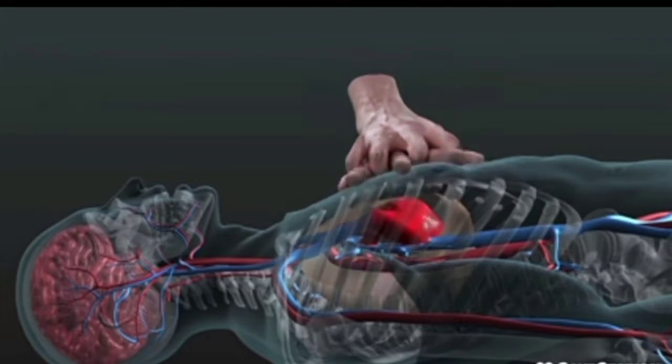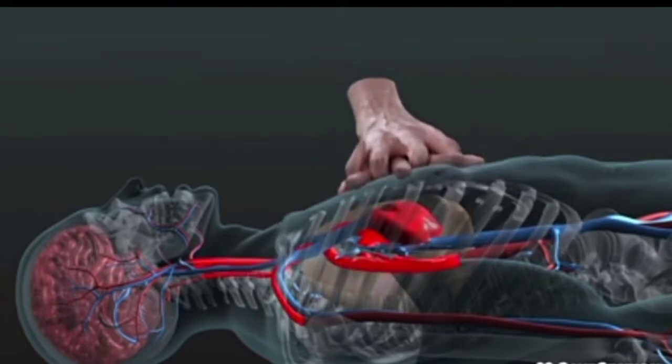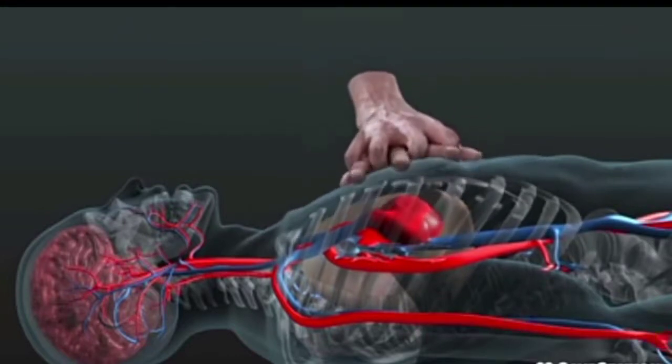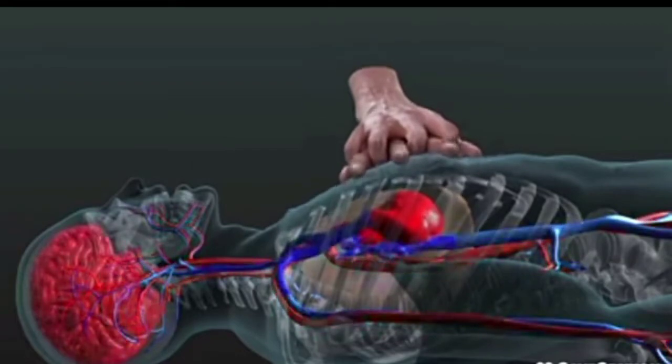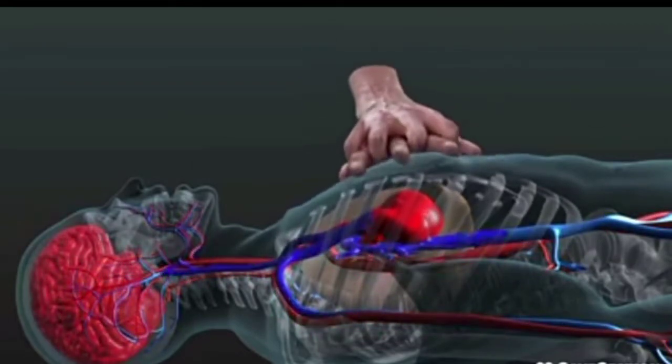As you begin compressions, you are creating an artificial pump and doing the work of the heart manually. With each good, effective compression, you are building up pressure in the system, which will move blood around the heart and up to the brain.